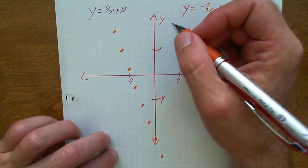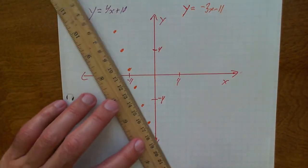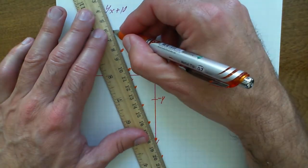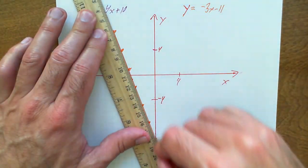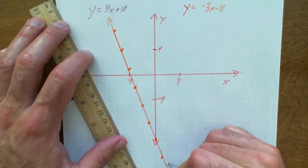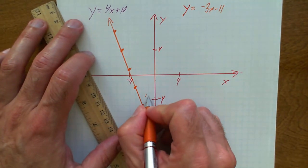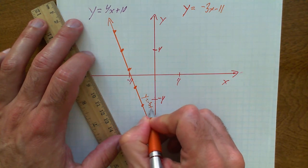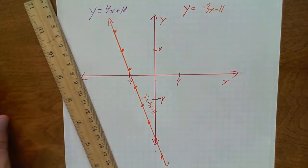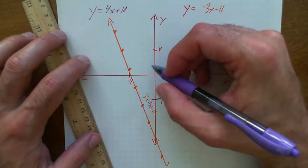And so forth. Now let's go ahead and plot those points and make a nice little line. If you don't know what I'm doing, watch all my other videos on how to graph this line — y equals negative 3x minus 11. And then let's graph the second one: y equals 4x plus 10.